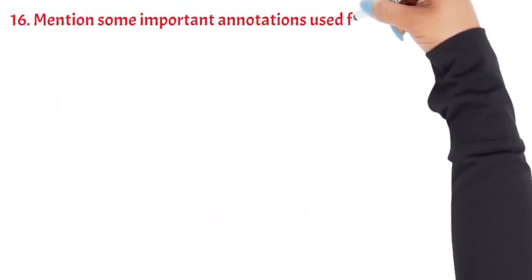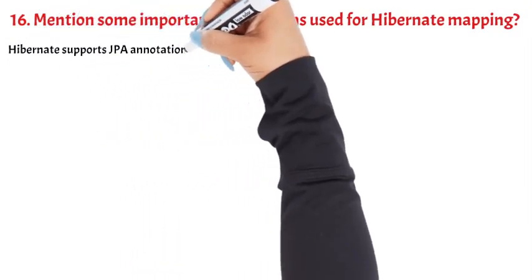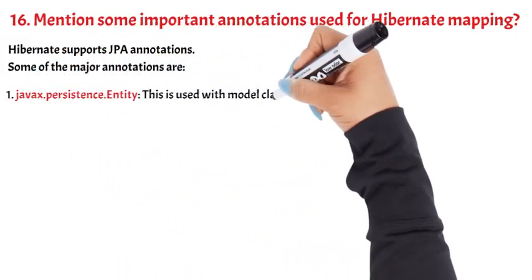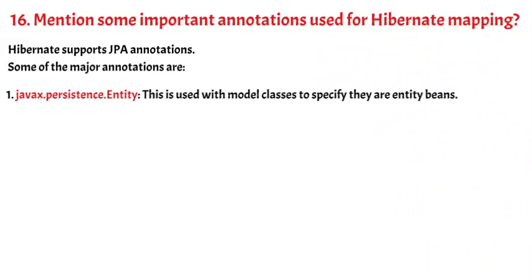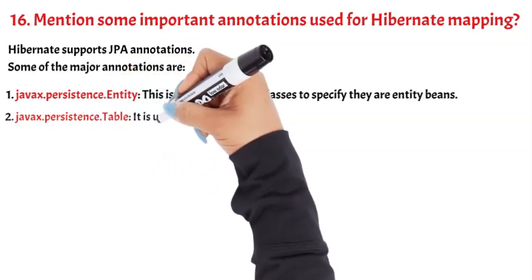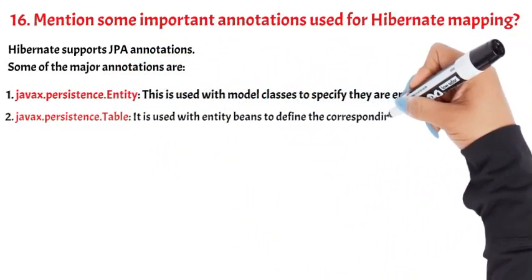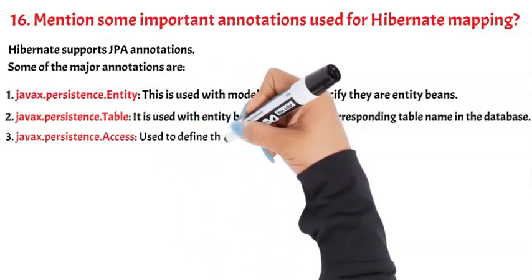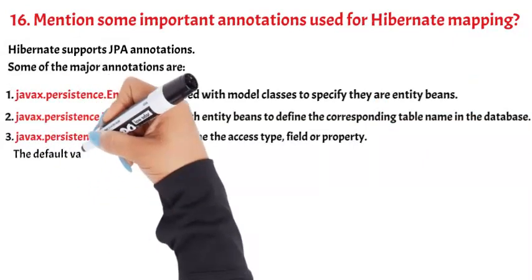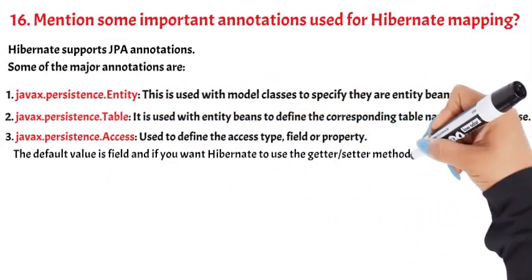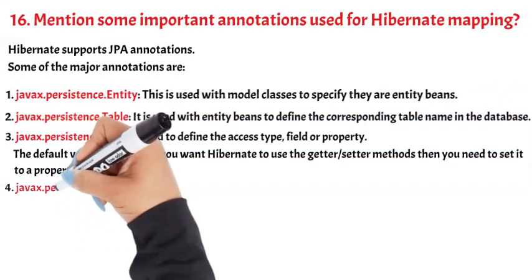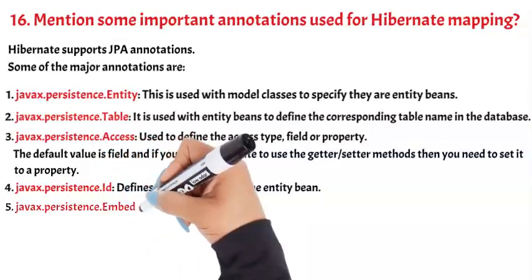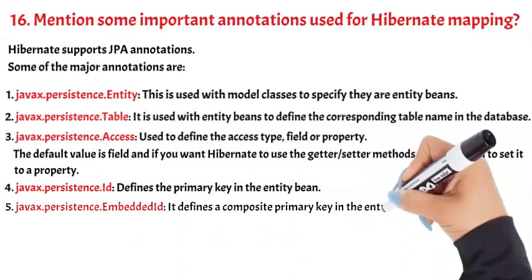Question 16: Mention some important annotations used for Hibernate mapping. Hibernate supports JPA annotations. Some of the major annotations are: 1) javax.persistence.Entity — used with model classes to specify they are entity beans. 2) javax.persistence.Table — used with entity beans to define the corresponding table name in the database. 3) javax.persistence.Access — used to define the access type (field or property); default is field, set to property if you want Hibernate to use getter/setter methods. 4) javax.persistence.Id — defines the primary key in the entity bean. 5) javax.persistence.EmbeddedId — defines a composite primary key in the entity bean. 6) javax.persistence.Column — helps in defining the column name in the database table.